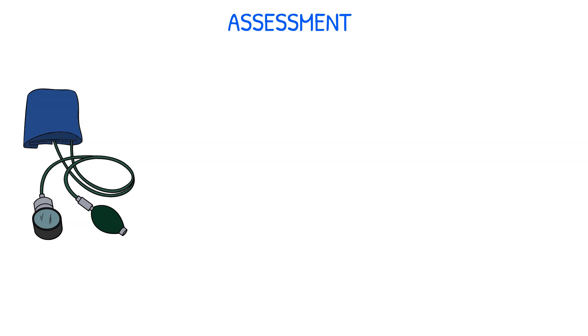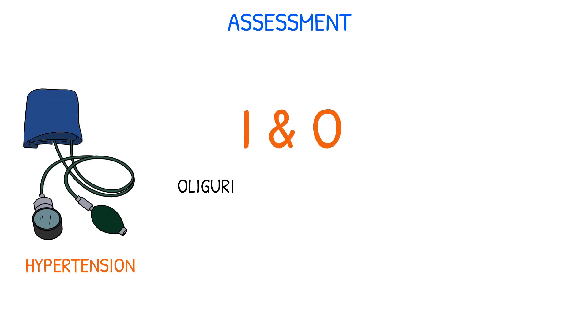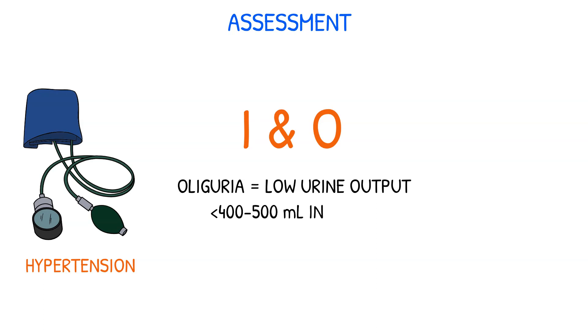Part of your nursing assessment will be monitoring vital signs. Acute kidney injury is linked to increased risk of hypertension. You will also want to monitor your patient's fluid intake and output. Low urine output, also known as oliguria, may sometimes be the only sign of this condition. A patient with oliguria will have urinary output less than 400 to 500 milliliters in a 24-hour period.